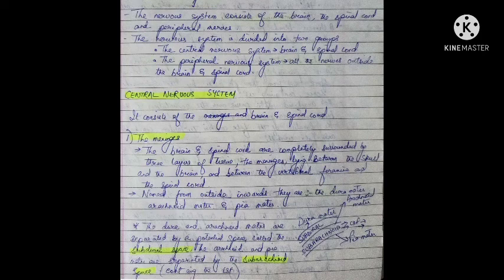Today we are going to discuss the structures of the brain under the central nervous system. We have the brain and the spinal cord. First, we'll discuss the meninges. The brain and spinal cord are completely surrounded by three layers of tissue called the meninges, lying between the skull and the brain, and between the vertebral foramina and the spinal cord. In short, it is a three-layer covering of the brain and spinal cord.